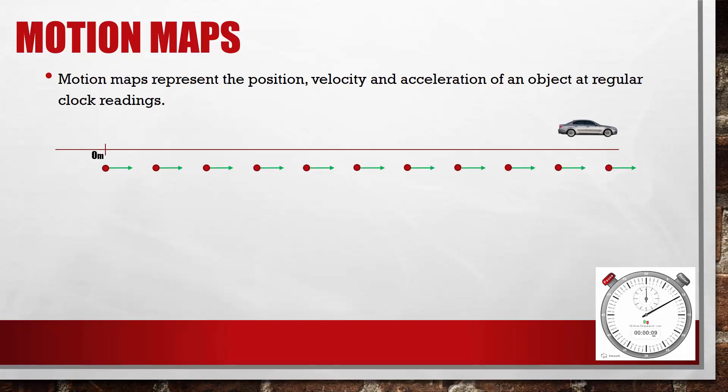Now let's take a look at the car and the corresponding motion map if the car were moving faster. We can see that because the car was moving more quickly, the dots that represent the position have more space between them.